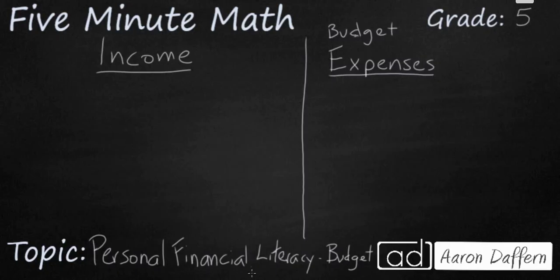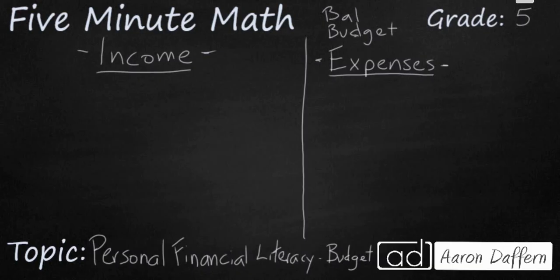When we're talking about a budget, we're talking about how we regulate the amount of money that we receive and the amount of money that we spend. The money that we receive is called income, because it comes into our account, whether it be a checking account or a savings account, or maybe money we just have around the house. The money that we spend is referred to as expenses. The key is trying to find a way to balance the budget, because when we balance the budget, that means our income is going to be equal to our expenses, or possibly our income is going to be greater than our expenses. Bad things happen when your income is less than your expenses.